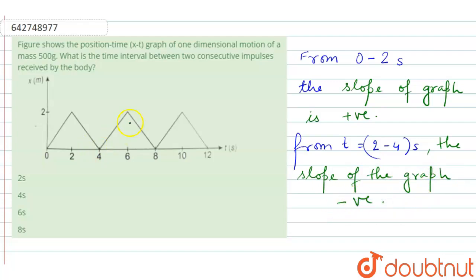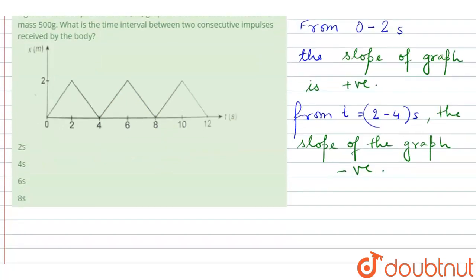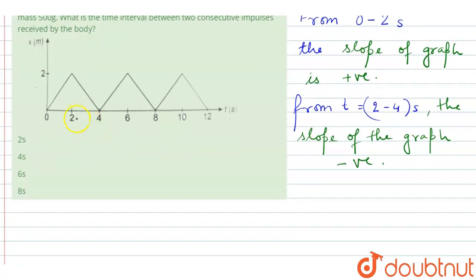So it goes on like this. From 4 to 6, it is again positive. Then 6 to 8, negative. This way it goes on. So we can see in every step there is a difference when the slope changes at a difference of 2.